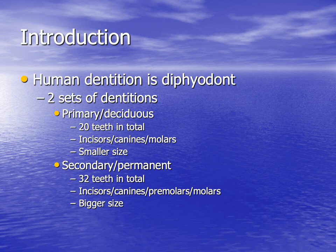The primary set contains 20 teeth in total, which include incisors, canines and molars — they are smaller in size. The secondary or permanent dentition has 32 teeth in total and they are bigger in size.